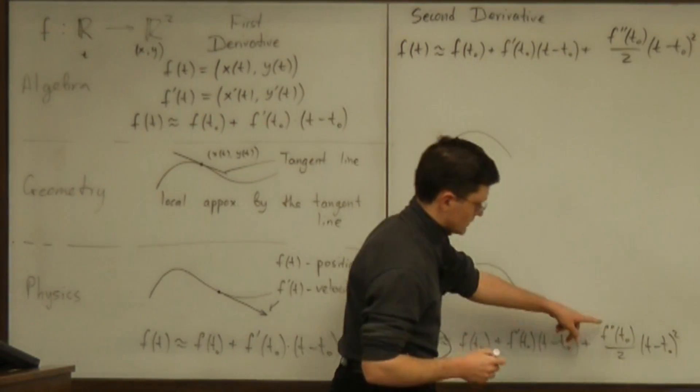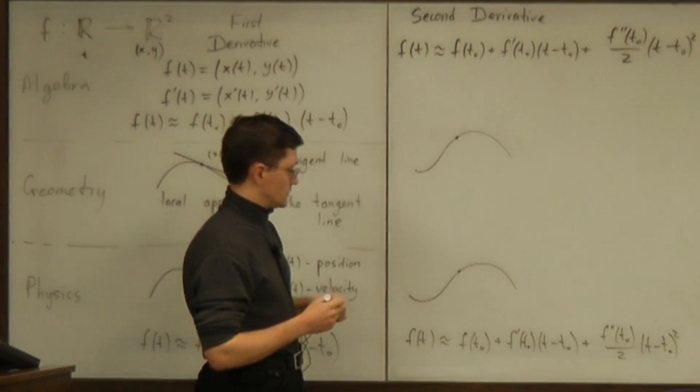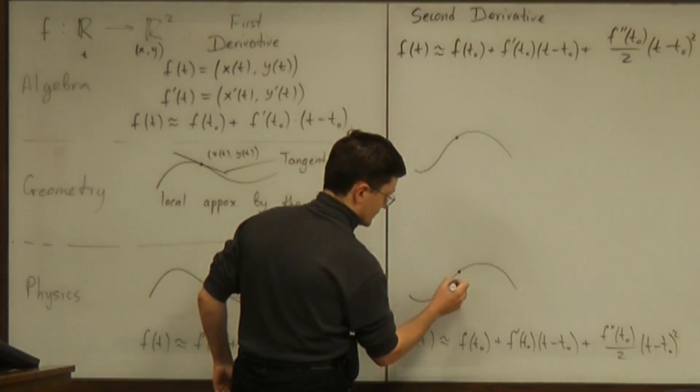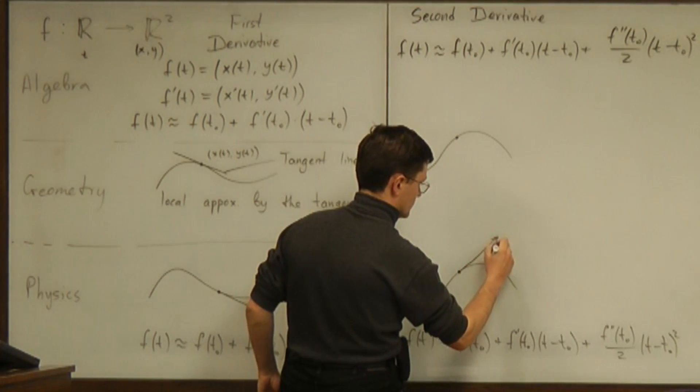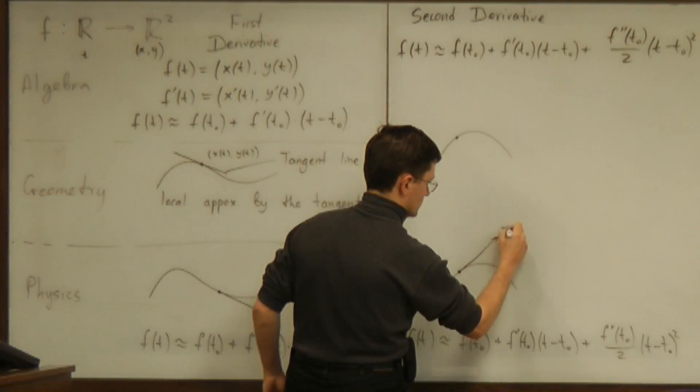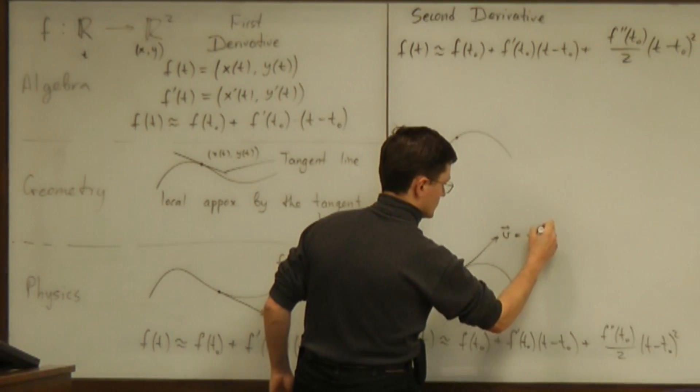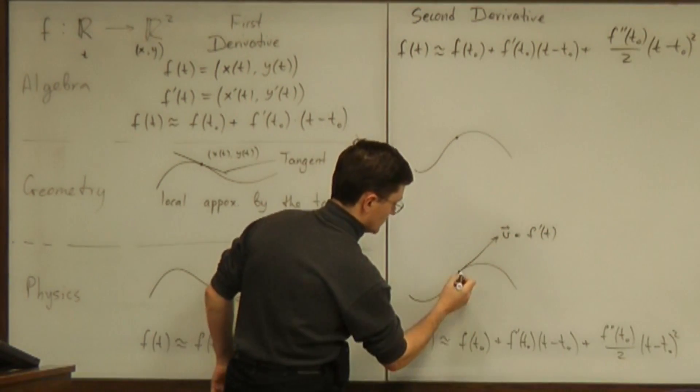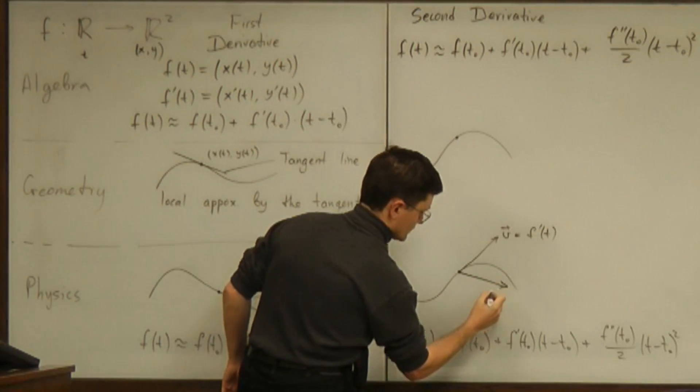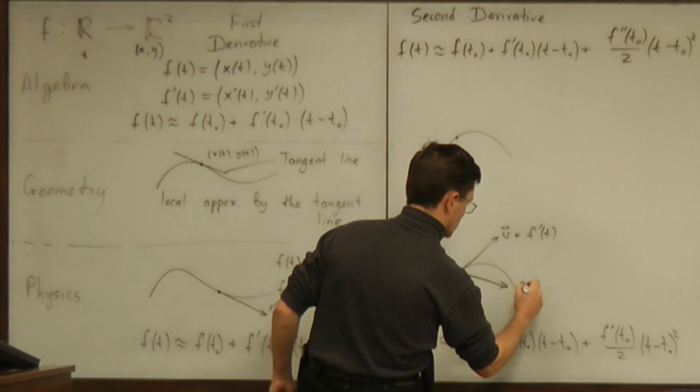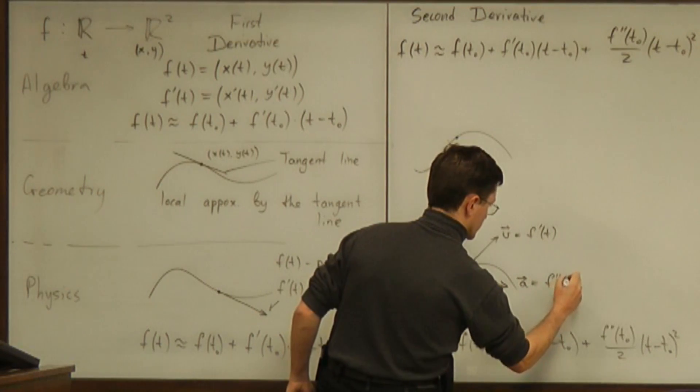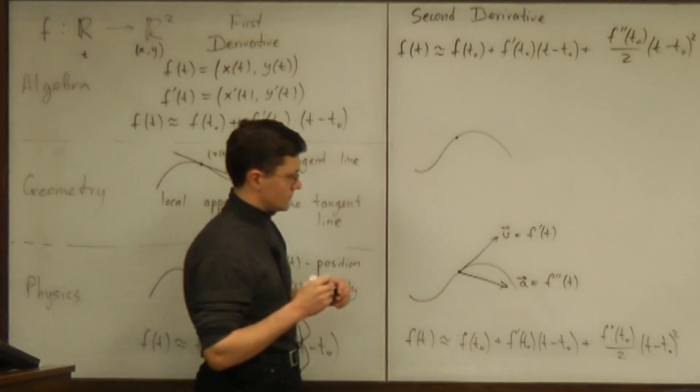And what is the significance of that second derivative from physics point of view? That is the acceleration. If this was the velocity, which is the first derivative, then acceleration is also a vector. And that acceleration is simply the second derivative of this position function.